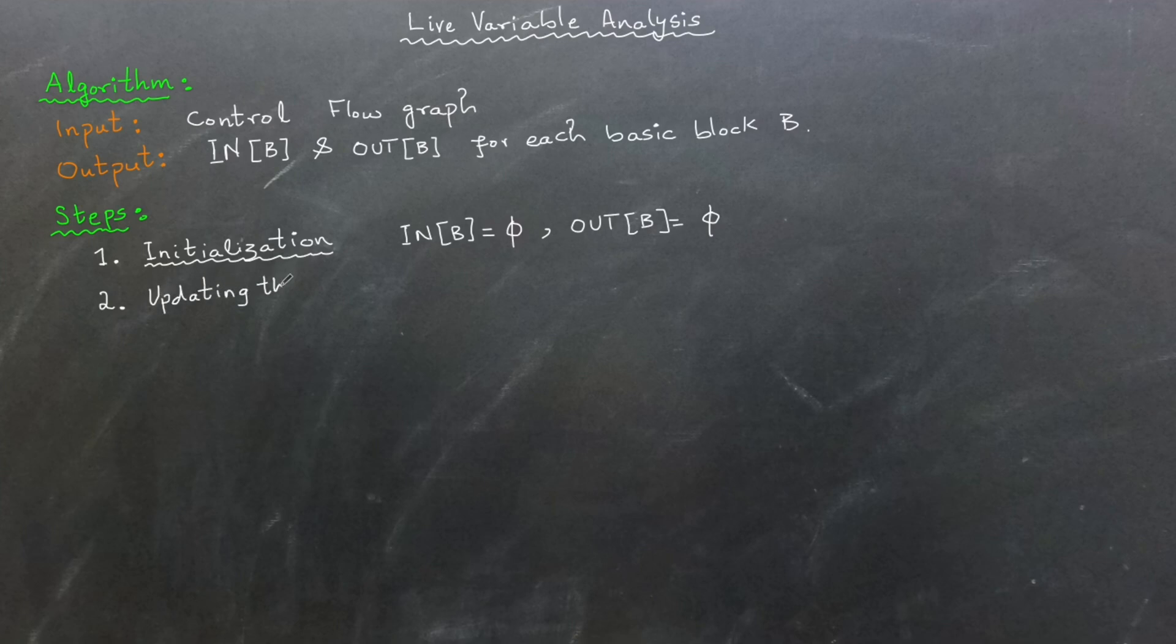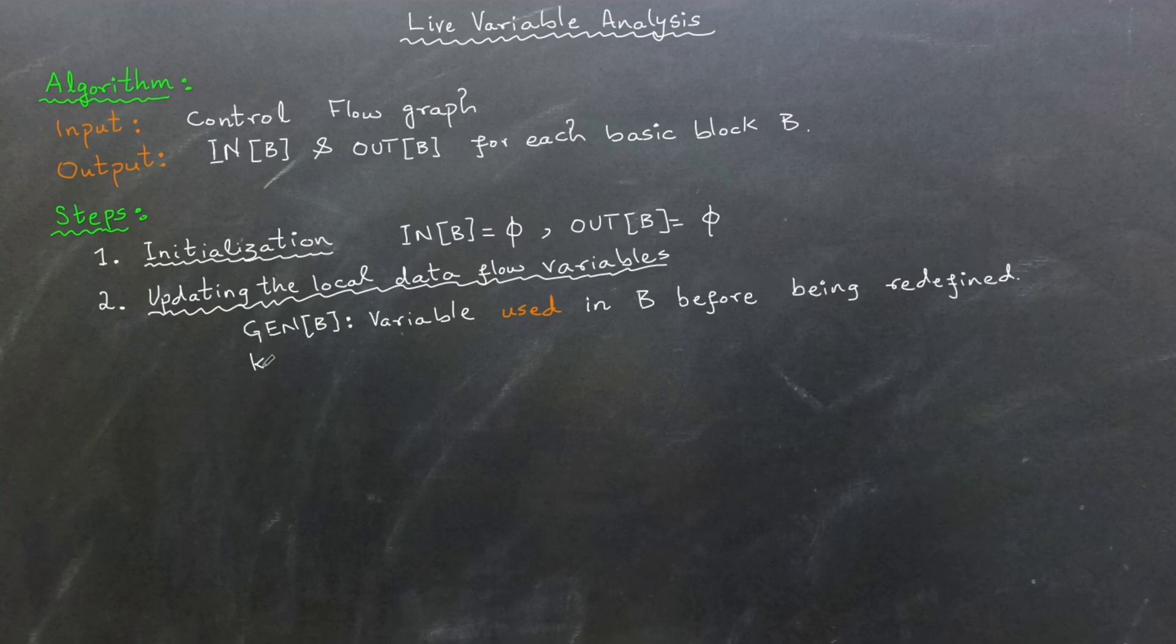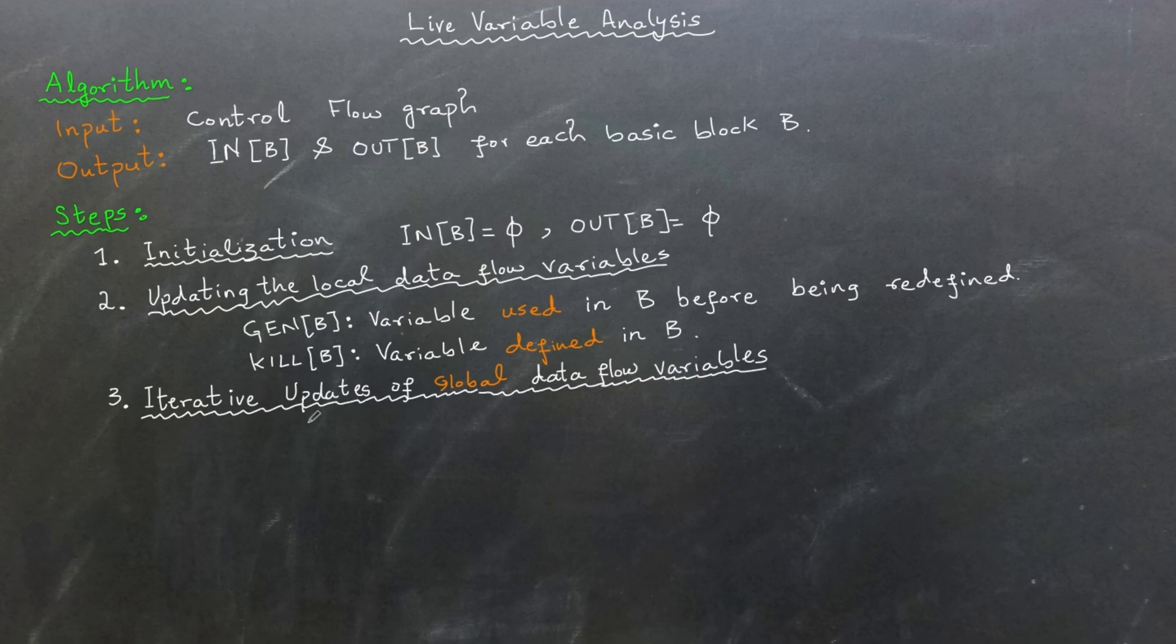Step 2, updating the local data flow variables for each basic block. The gen set, which contains the variables used in the basic block B before being redefined. Step 3, the kill set, which contains the variables that are defined in basic block B. Step 3, iterative updates for global data flow variables. Now, we iteratively update the in and out sets for each basic block B until they start to stabilize, meaning they are no longer change.